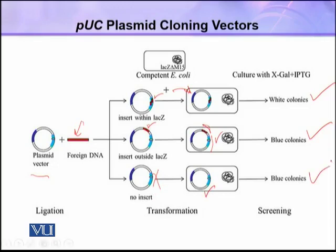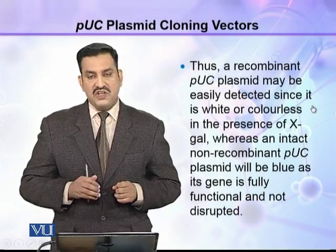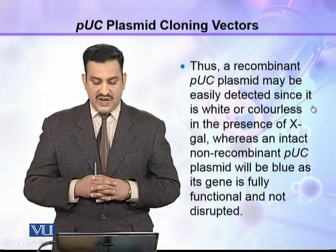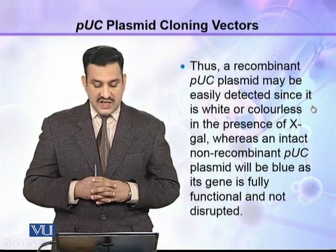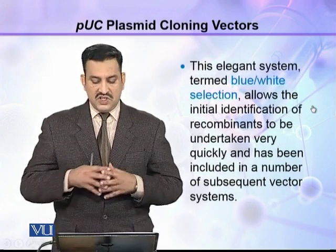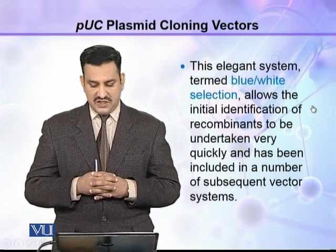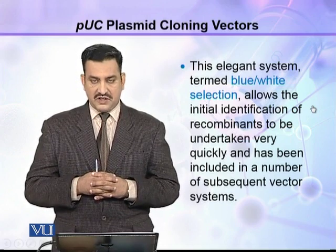Blue colonies indicate there is no insert and lacZ is intact. White colonies indicate that the DNA insert is present at the cloning site. Thus a recombinant PUC plasmid may be easily detected since it produces white or colorless colonies in the presence of X-gal, whereas an intact non-recombinant PUC plasmid will produce blue colonies as its lacZ gene is fully functional and not disrupted.